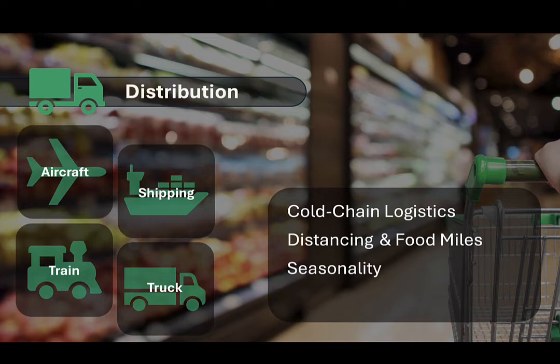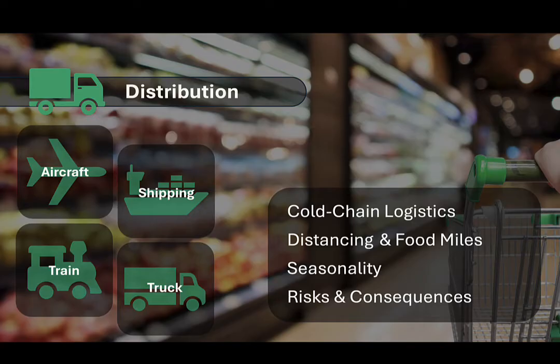But for all these benefits, the globalized system of food distribution comes with some risks and consequences as well. Supply chain disruptions caused by natural disasters, pandemics, or geopolitical conflicts can cause delays and shortages. A prime example of this were the food shortages resulting from the COVID-19 pandemic, which resulted from significant disruptions in the global supply chain, affecting transportation and labor availability. The globalization of food supply chains can also have real environmental impacts, though this has to be weighed against the environmental impact of local production. One study found that the carbon emissions associated with apple production in the United Kingdom were significantly greater than growing apples in New Zealand and shipping them to the UK for consumption.